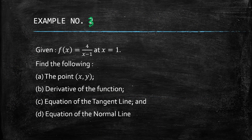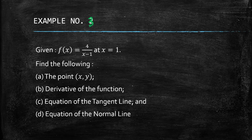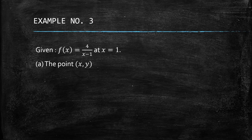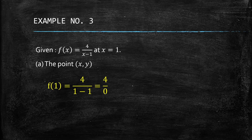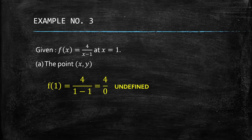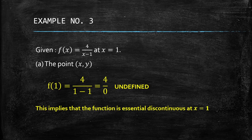Example number three: given f(x) = 4/(x − 1) at x = 1, find the point, the derivative, the equation of the tangent line, and the equation of the normal line. For the point, we substitute x = 1: f(1) = 4/(1 − 1) = 4/0, which is undefined. We cannot divide by zero.